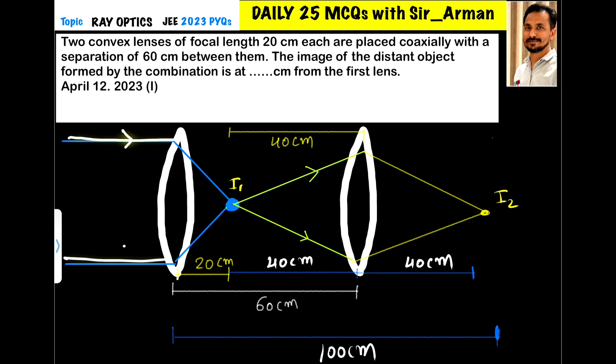So these are the rays, and these parallel rays after refraction from the lens they will converge at the focus. So this is the image I1 formed by the lens one, and the distance will be 20 centimeter which is the focal length of the first lens.